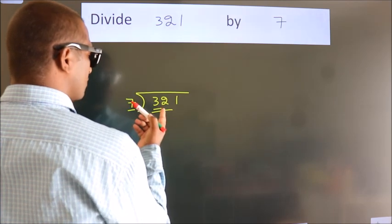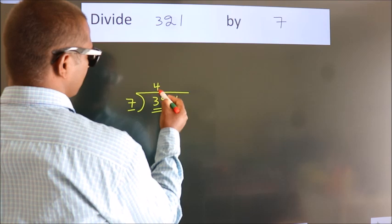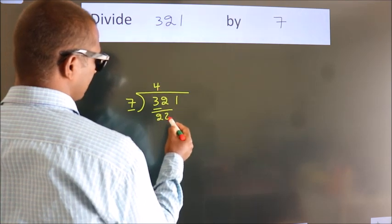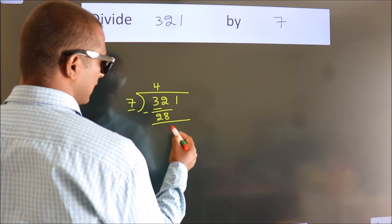A number close to 32 in the 7 table is 7 fours, 28. Now we should subtract. We get 4.